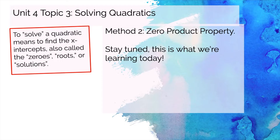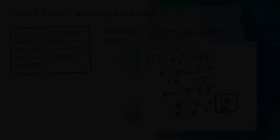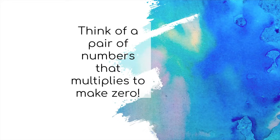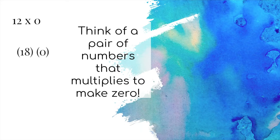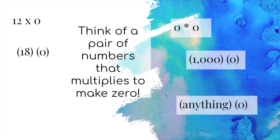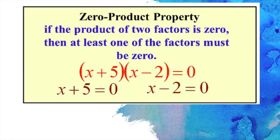We're going to learn the zero product property today. Then after that we will learn solving by square roots and the quadratic formula. To warm up, think of a pair of numbers that multiplies to make zero. Anything times 0 equals 0, so one of those numbers has to be zero. This is the foundation of the zero product property: if two things are multiplied together to make zero, then at least one of those factors has to be zero.